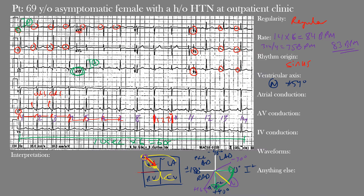For atrial conduction, we typically look at leads II and V1 for P-wave or atrial abnormalities. There are small biphasic P waves in lead V1, but the P waves are much easier to make out in lead II. The P-wave duration appears within normal limits — normally defined as less than 120 milliseconds or three small boxes. A prolonged P-wave duration suggests left atrial abnormality, since the terminal portion of the P wave represents left atrial depolarization. In this case it's normal, so we have normal atrial conduction.